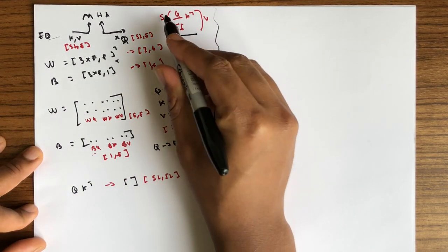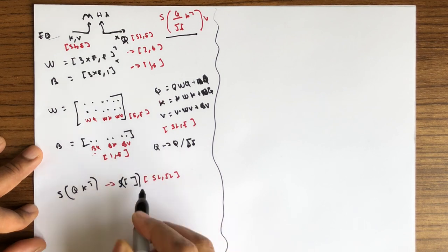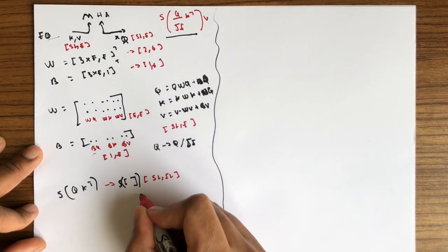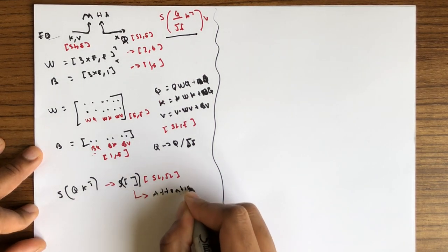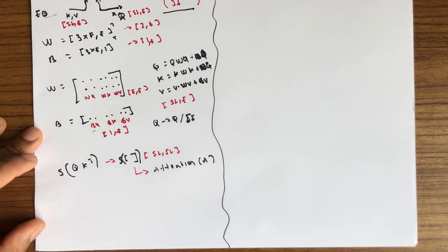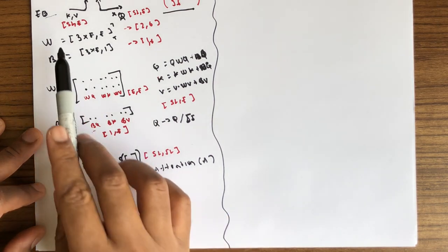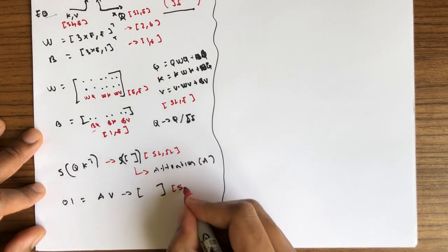Now we need to take the softmax of this tensor. When we take the softmax, the dimension is still going to be sl by sl — it will not change. The output of this softmax is our attention matrix A. Output one is then attention times V, and we end up with a tensor of dimension sl by e.